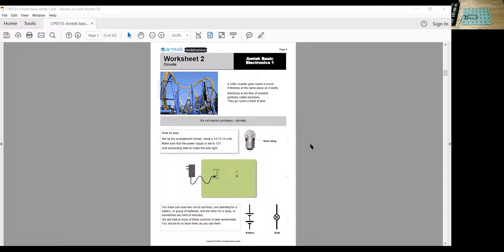All right, so set up the arrangement shown using a 12-volt, 0.1-amp bulb, and make sure that the power supply is set to 12 volts. We know that already is. And then we're going to add our own connecting links to make the light bulb light up. All right, so we'll switch back and set this up the way that they want it.